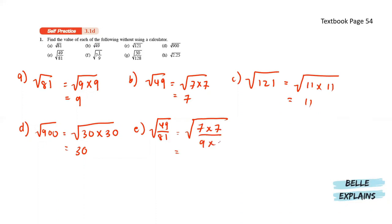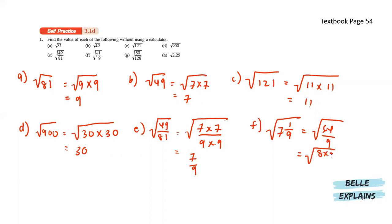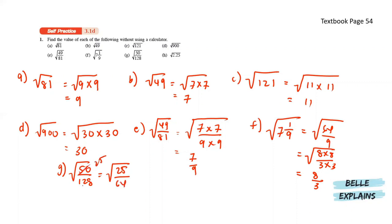7 times 7 over 9 times 9 gives us 7 over 9. Next for F, we have the square root of 7 and 1 over 9. So this is actually 64 over 9, and that means the square root of 8 times 8 over 3 times 3, so that will give us 8 over 3. Next for G, we have the square root of 50 over 128. When we simplify this, we will get the square root of 25 over 64. The numerator divided by 2 gives us 25 and the denominator divided by 2 gives us 64. So simplifying, we have the square root of 5 times 5 over 8 times 8 and that gives us 5 over 8.